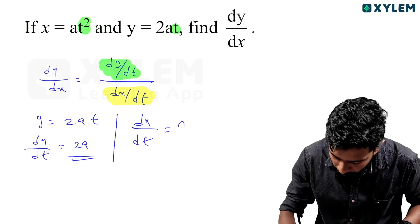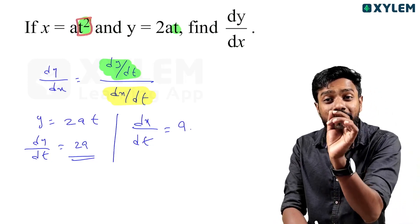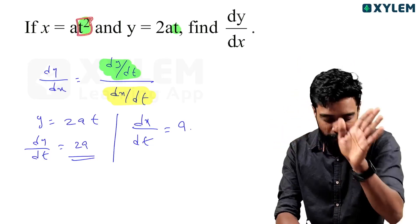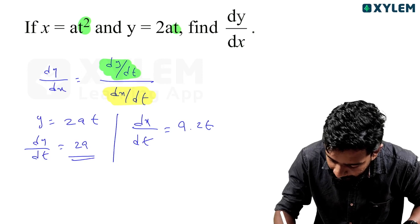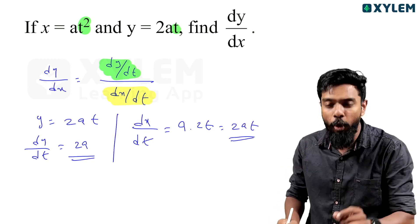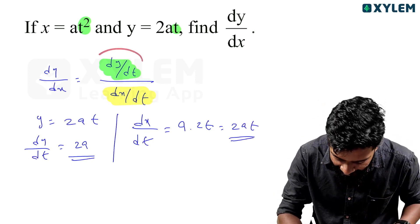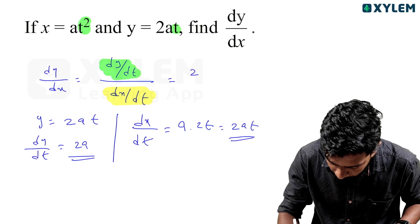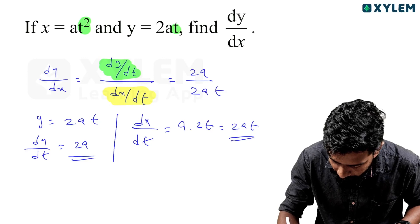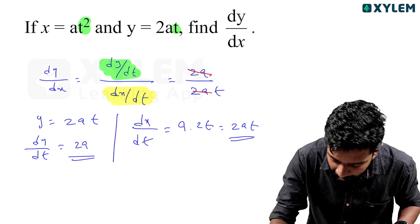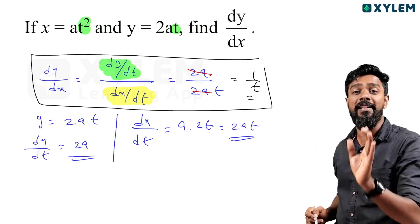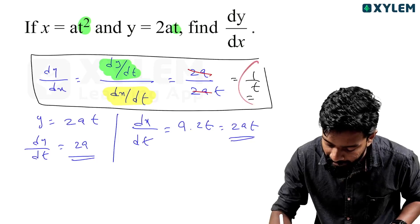That means a into the derivative of t squared with respect to t. The derivative of t squared is 2t. So 2at is dx by dt. Now substituting: dy by dt is 2a, and dx by dt is 2at. The 2a cancels, leaving 1 by t. So dy by dx equals 1 by t.